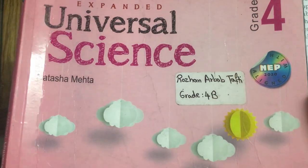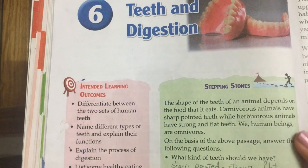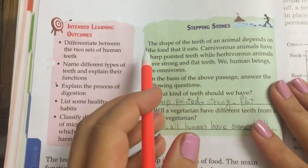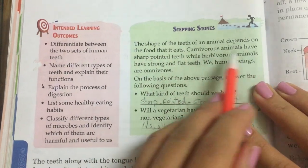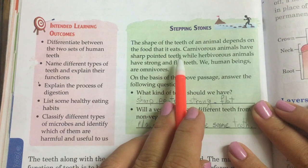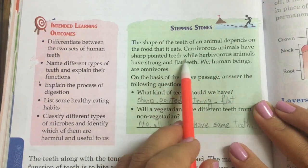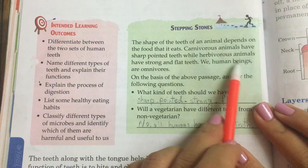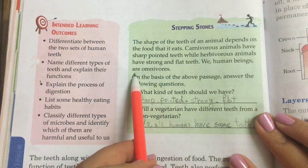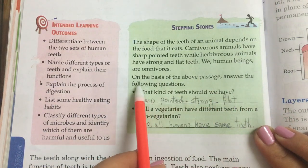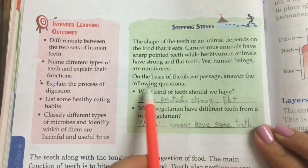The name of the chapter is Teeth and Digestion. Stepping Stones: The shape of the teeth of an animal depends on the food that it eats. Carnivorous animals have sharp pointed teeth, while herbivorous animals have strong and flat teeth. We, human beings, are omnivores. On the basis of the above passage, answer the following questions.